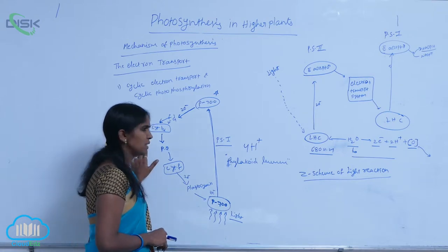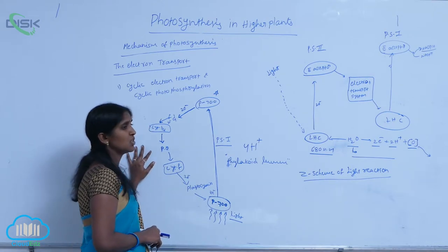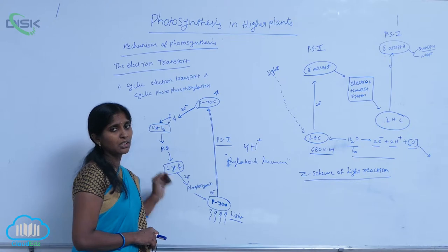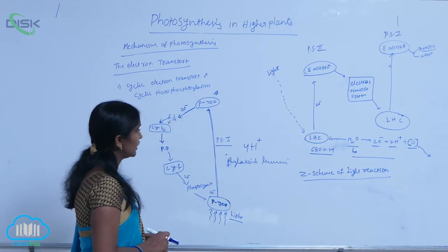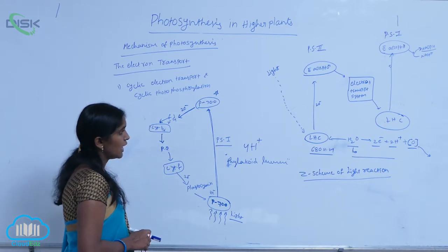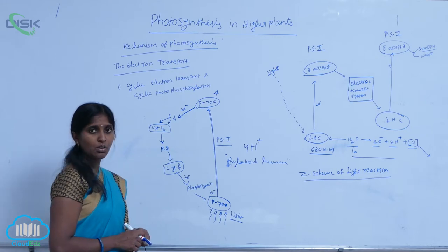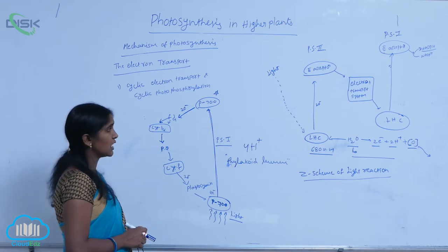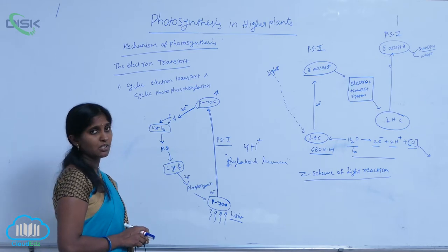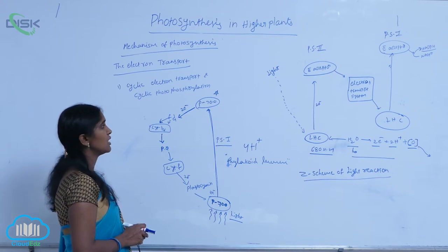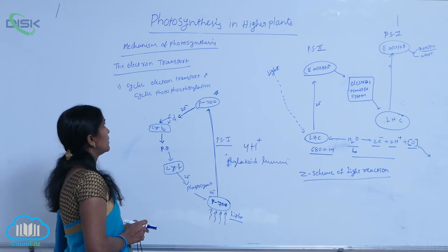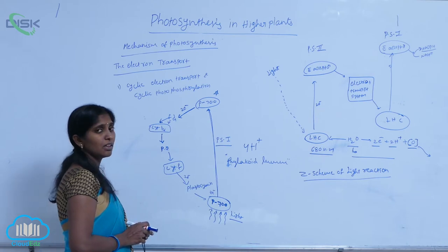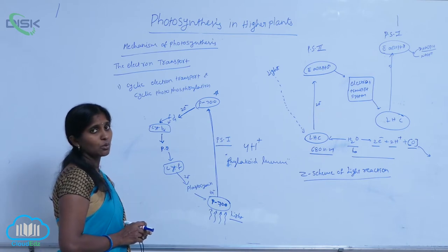Cyclic phosphorylation occurs at the stroma lamellum, where there is a lack of photosystem 2 as well as NADP reductase — the oxidoreductase enzyme. Due to that, there is only the possibility of cyclic electron transportation.